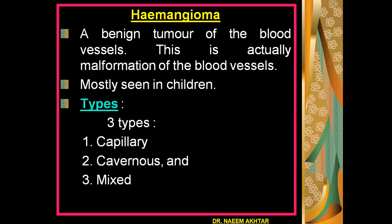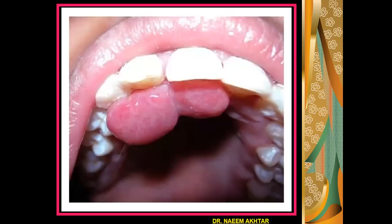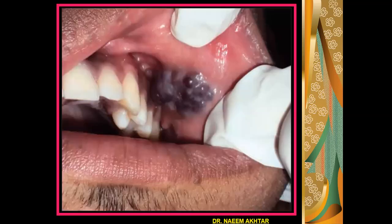The second benign tumor in the oral cavity is hemangioma. Hemangioma is a benign tumor of the blood vessels — actually this is a malformation of the blood vessels, mostly seen in children. It can appear in three types: capillary hemangioma, cavernous hemangioma, and mixed variety. This photograph shows hemangioma present in the oral cavity affecting the hard palate; the gingiva is affected just behind the upper incisor teeth. This is a hemangiomatous mass arising from the mucosa on the cheek.